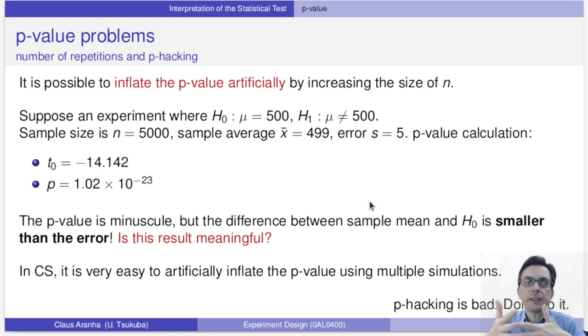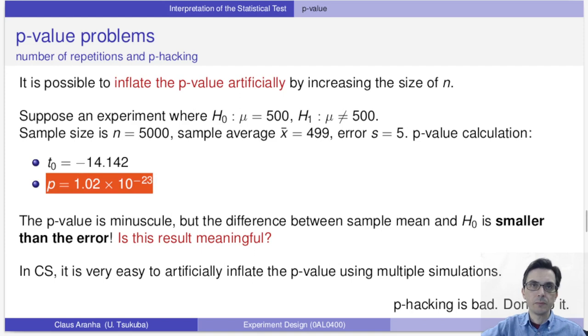Another problem with relying too much on the p-value is that it's very easy to inflate the size of the p-value by manipulating the experiment design. For example, if we can increase the number of observations easily, we can reduce the p-value to a very small number even if the difference between the null hypothesis and the true value is very small. Look at this example: the difference between the null hypothesis 500 and the real data 499 is very small, even smaller than the error, but because we have a very big n, the p-value becomes very small. In computer science this is a particular problem because we can artificially inflate n by using many simulations or a large number of cross-validations.